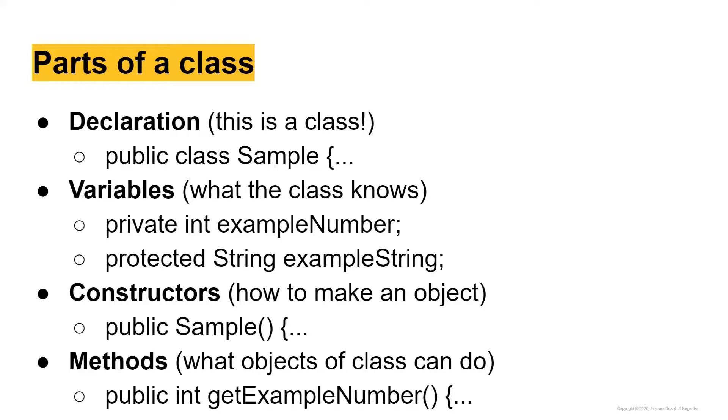And then the third type, the most restricting type is private. And that means that private variables are completely inaccessible to any classes, anything outside of the current class.